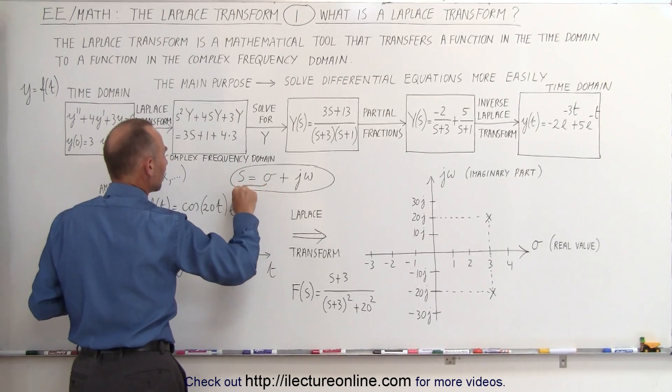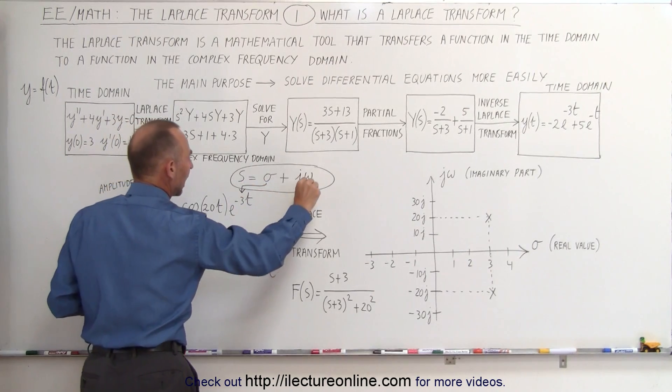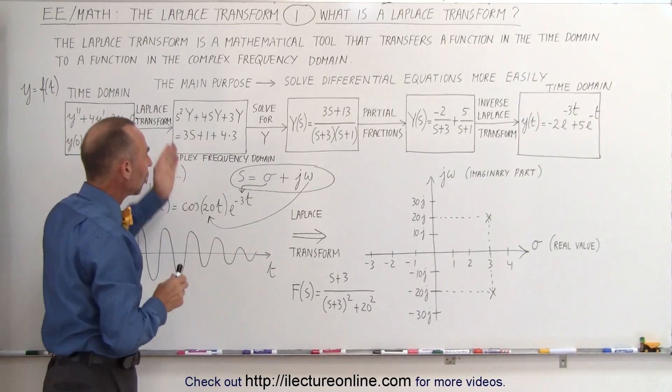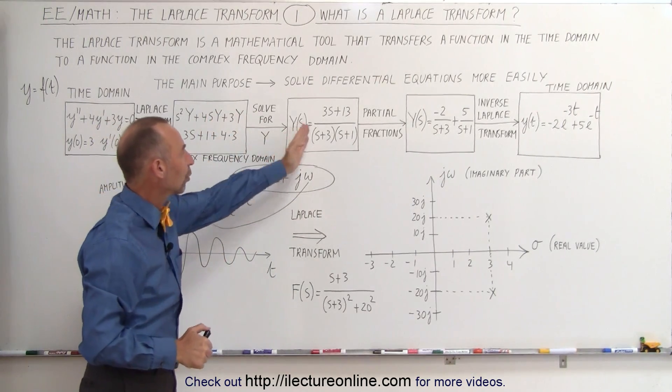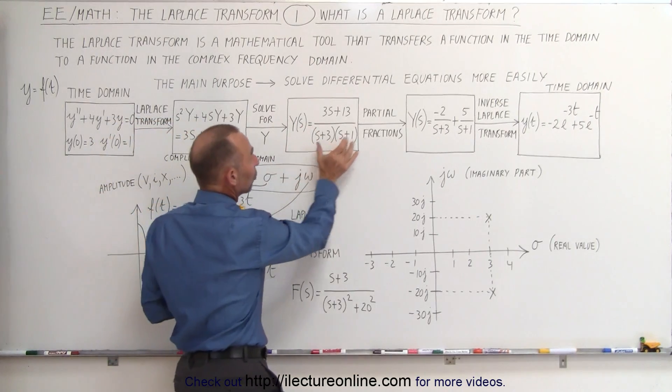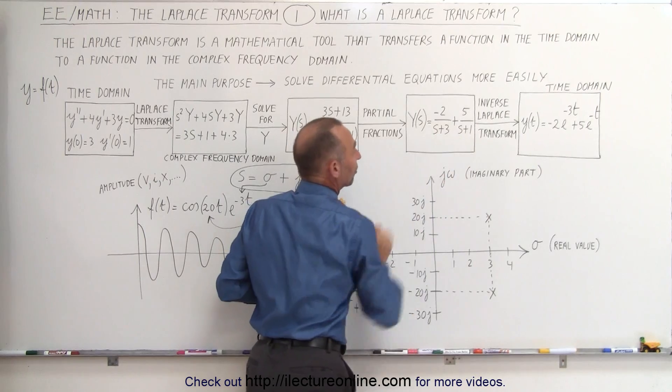In other words, this sigma means this number three here, and this omega really means this number 20 there. So we solve this equation for y in terms of independent variable s, and then we use partial fractions to write it as a sum of fractions like this.